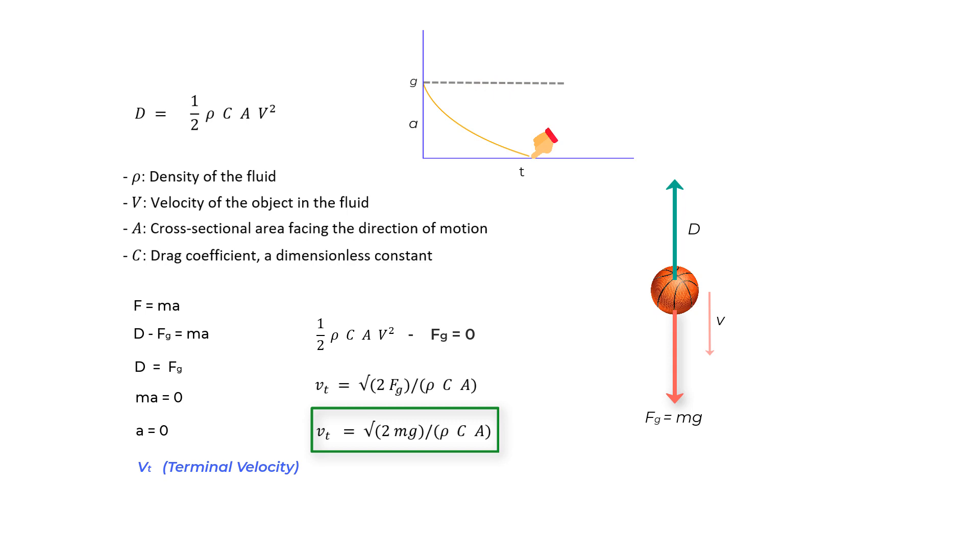Also, if you draw a velocity versus time graph for the same body, it would look something like this. Its velocity increases first, but then as the acceleration approaches 0, the velocity approaches a constant velocity or the terminal velocity. Again, if there was no drag force, the velocity would have just kept increasing because the acceleration due to gravity would have continued to act on the body, increasing its velocity.